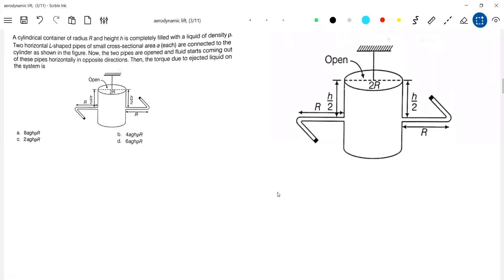Here, where are the holes? The holes are at a depth h by 2. So what is the velocity? This will be v. What is v? It's equal to root of 2g h by 2, which is root of gh. Then this emerging liquid will exert a force on this one.